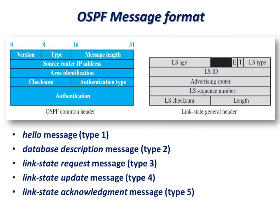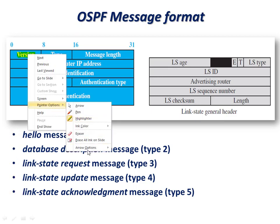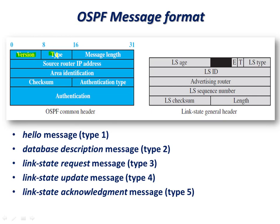To implement OSPF, the message format must be understood. It is more complex than RIP. The OSPF common header includes: version and type fields, a 16-bit message length field, the source router IP address, area identification (e.g., area 0, 1, 2), a checksum for error detection, authentication type, and an authentication field to prevent packets from being forwarded to unauthorized network systems.